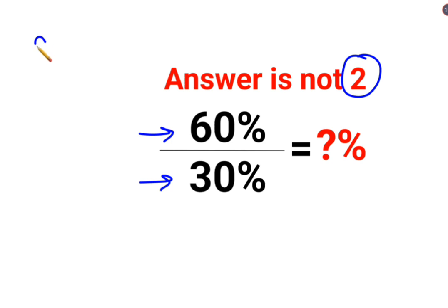so now please understand whenever you have a percent sign ahead of any number, you can convert that number into a fraction by dividing that number by 100. So, 60% can be written as 60 upon 100 divided by 30%, so that is 30 upon 100.